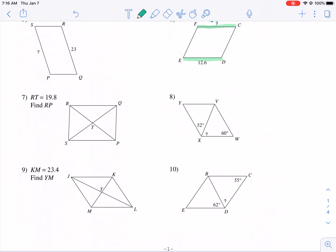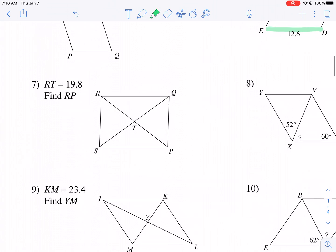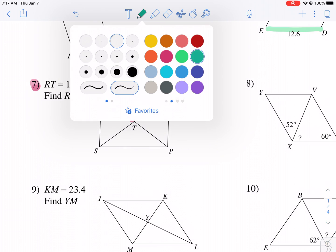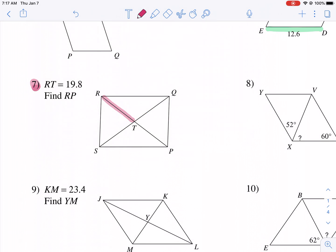All right, let's see here. Next up we have, this one's a little more challenging. Another property going on. Let's change colors again. So number seven. We're asked to find RP, given that RT equals 19.8. So one thing about parallelograms is that the diagonals bisect each other. That means that these measurements are equal, and that means the same for these two segments here that I just highlighted.